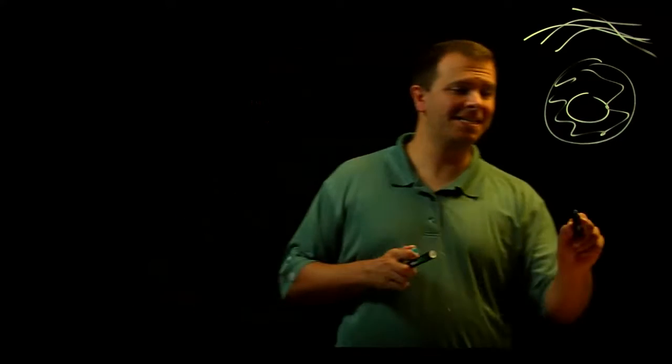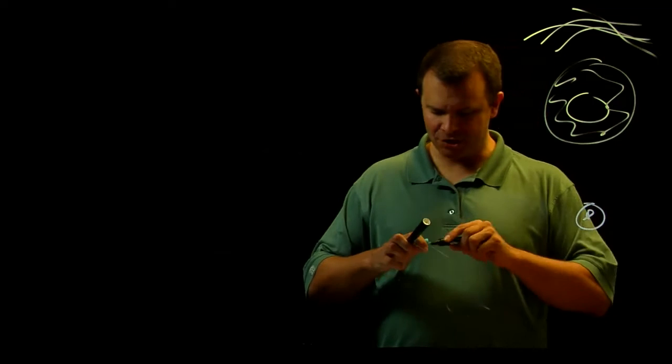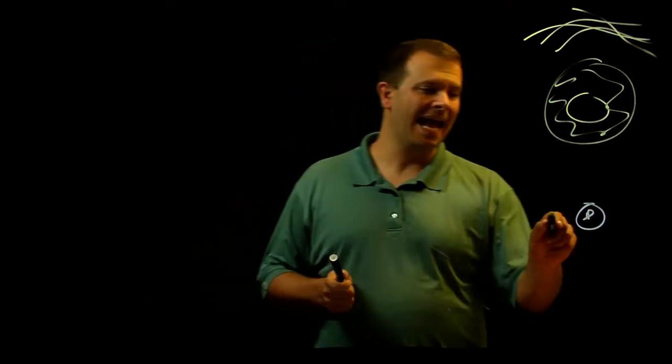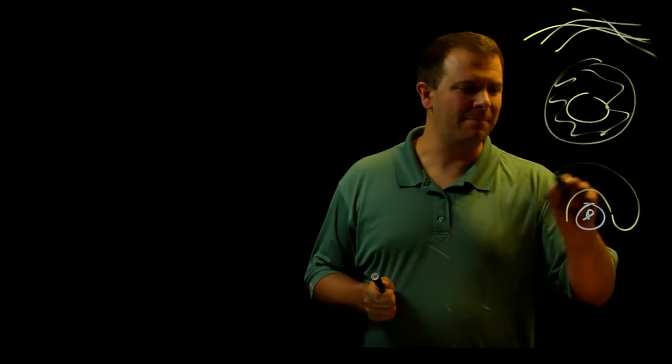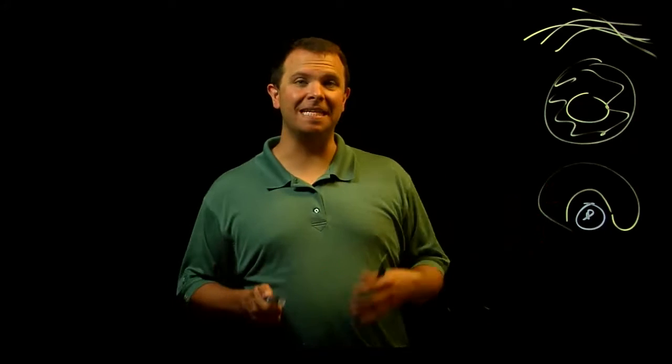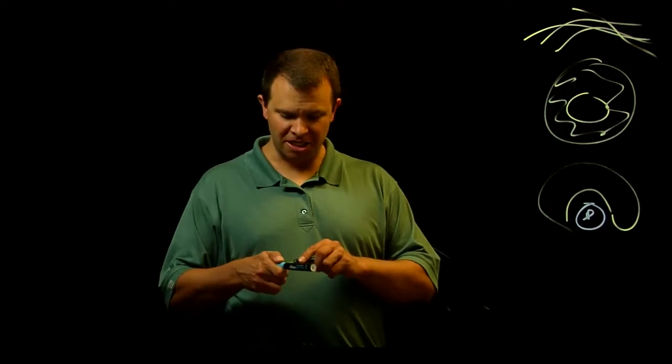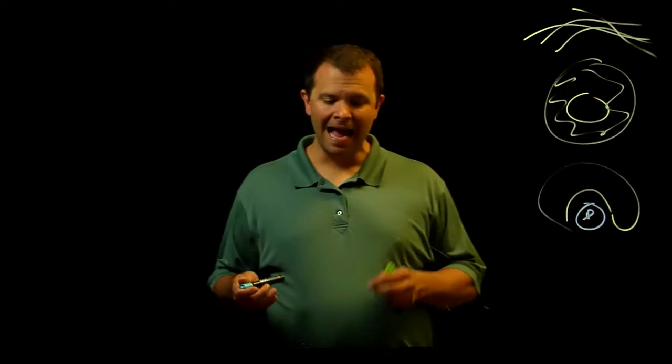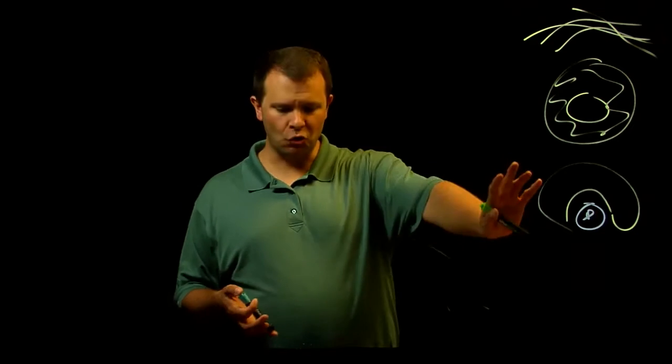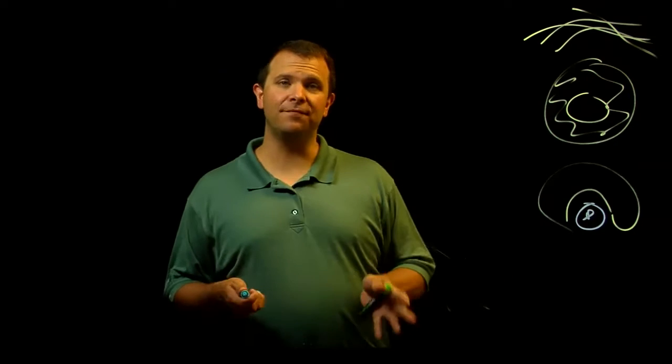Or proteins that bind to DNA. So if this is a DNA strand, then these proteins have kind of a claw shape which grabs onto specific sequences of DNA and turns genes on and off. How do proteins acquire all of these diverse shapes?